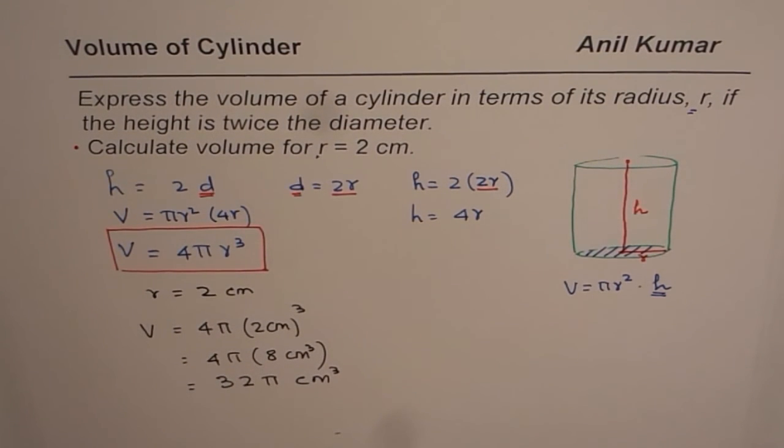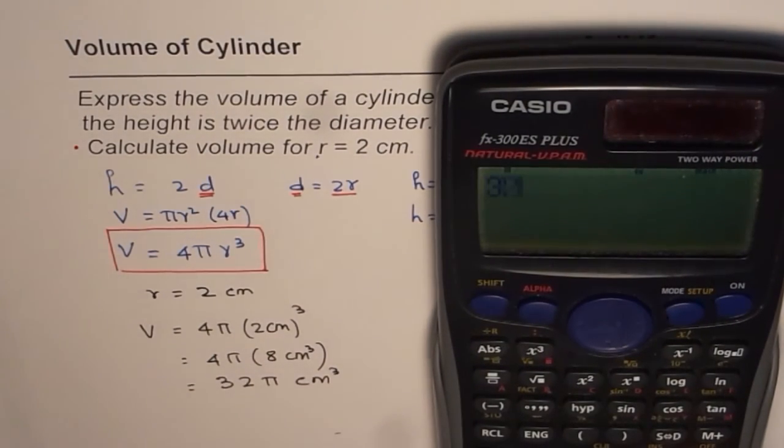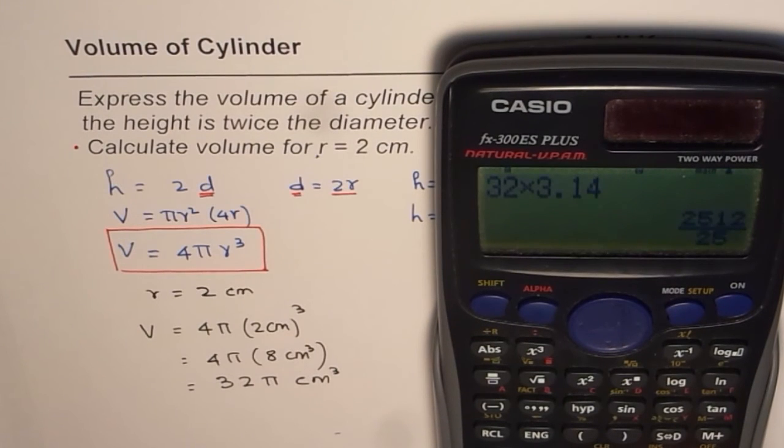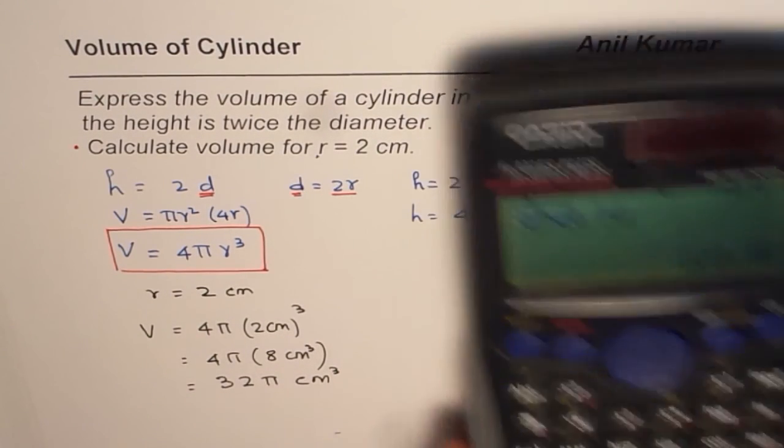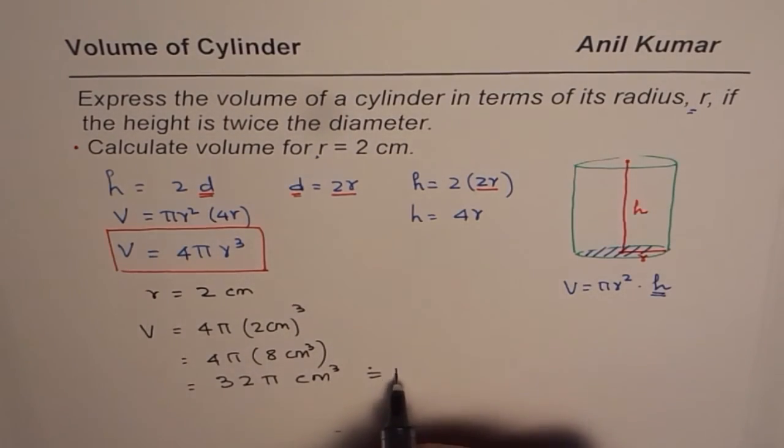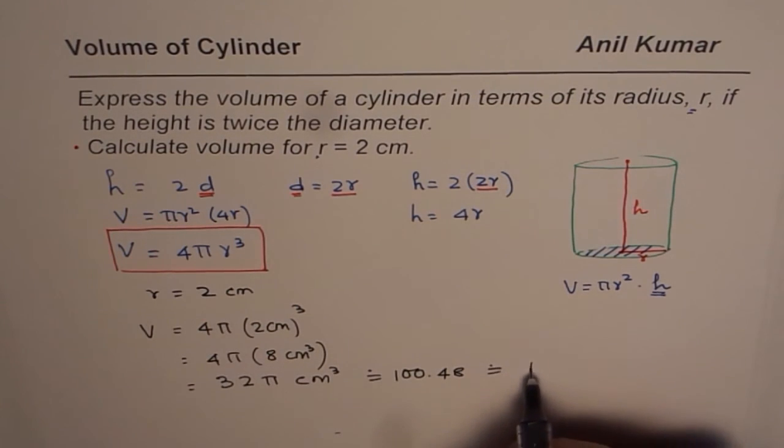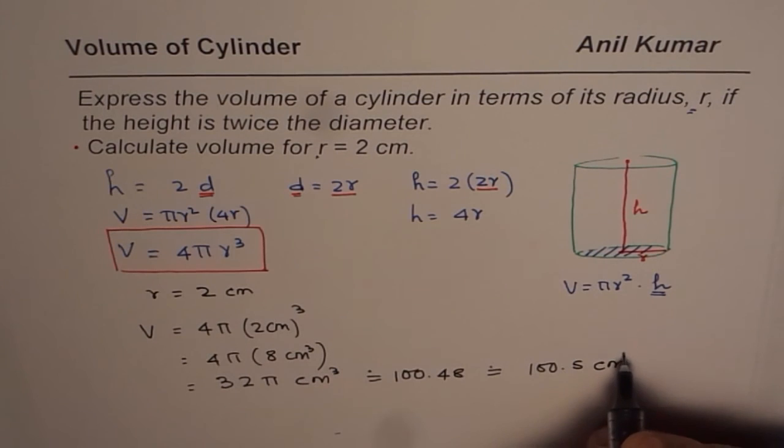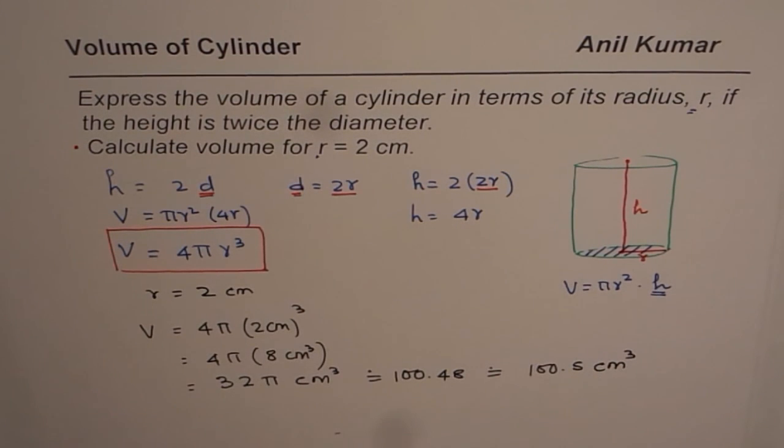Now pi you can use as 3.14. So we will use 32 times 3.14 equals to, in decimals, 100.48. So we could write this as 100.48. So approximately 100.48 or you could say 100.5 centimeter cube. So that becomes the volume for the given situation where height is twice the radius and the radius is 2 centimeters.